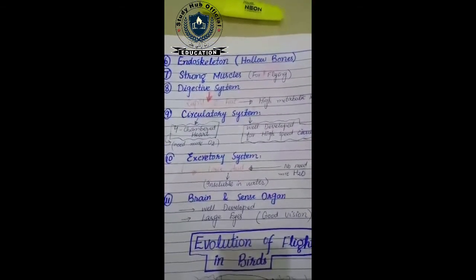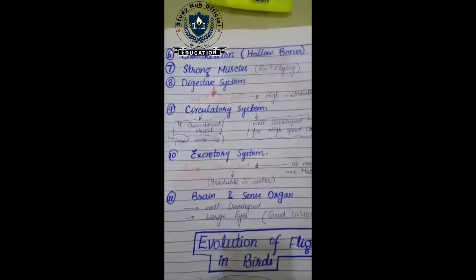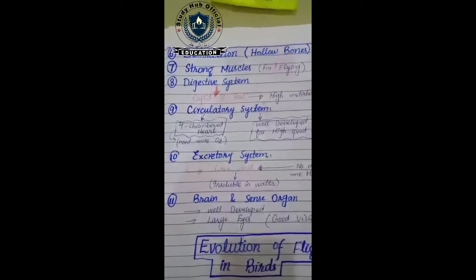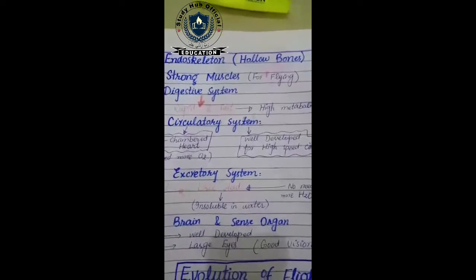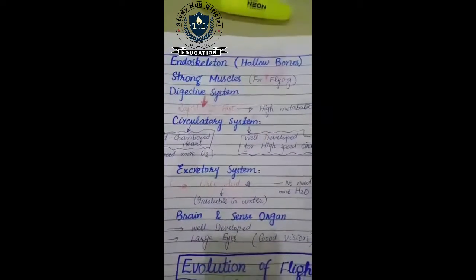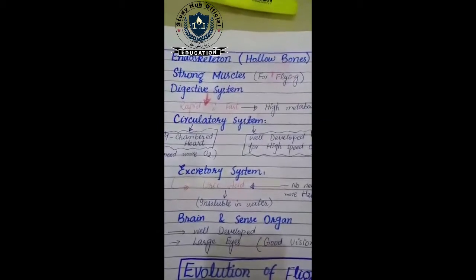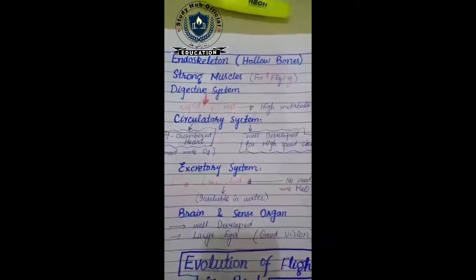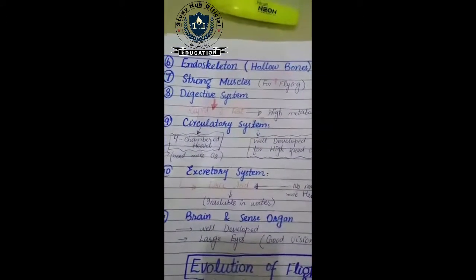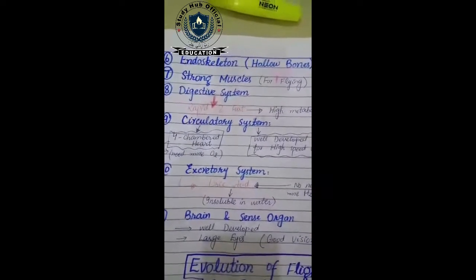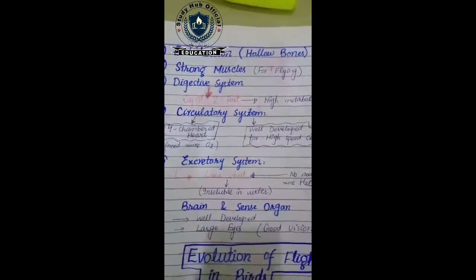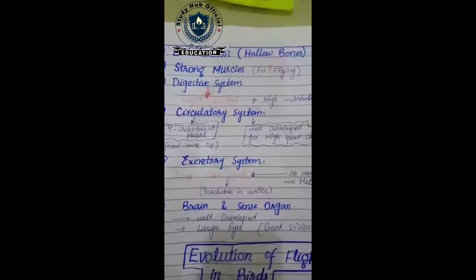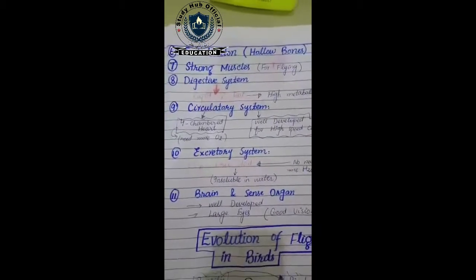The next character is endoskeleton. As we saw in the introduction, their bones are pneumatic bones — hollow bones. Their bone structure is not very hard, and there are air spaces present inside them where air is present. Because of this their bones are not heavier, and as a result their body is light in weight. Common sense says that if a body is light in weight, flying is much easier compared to a heavier body.